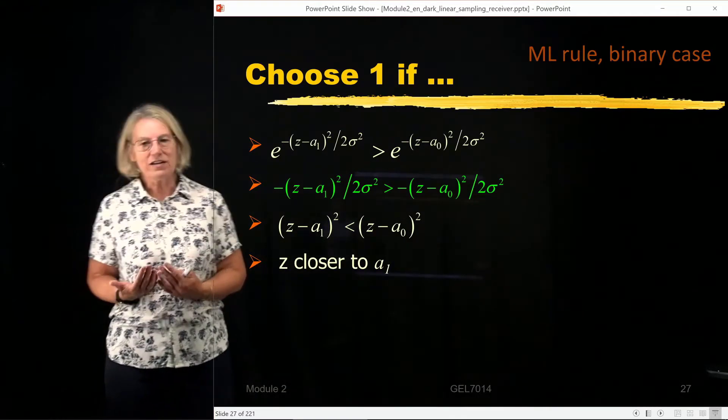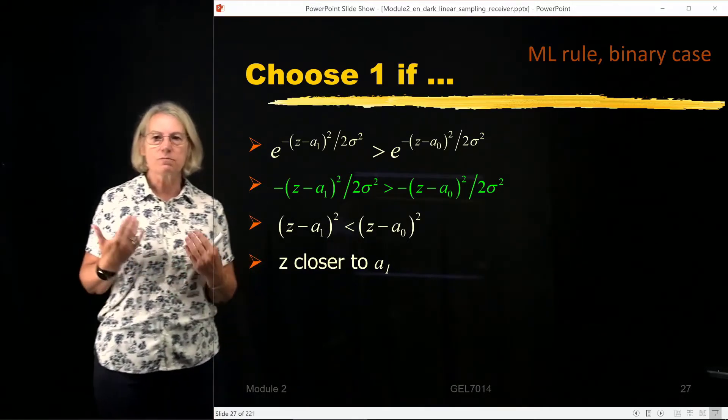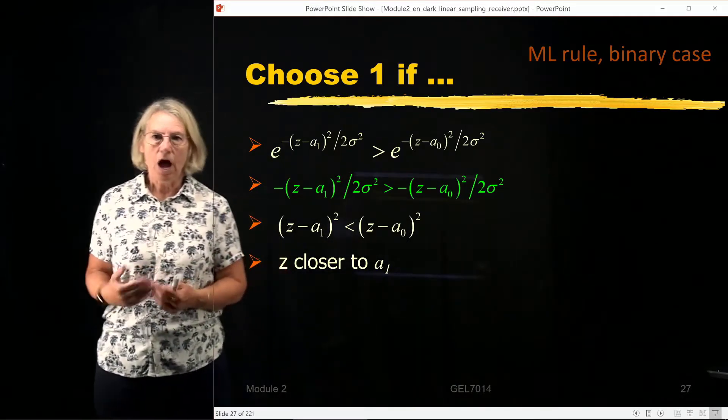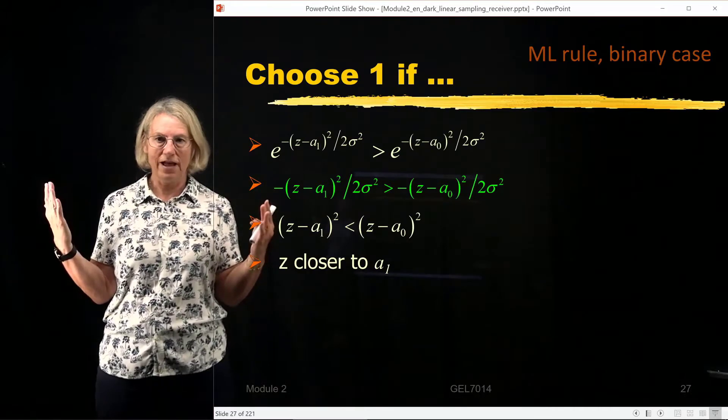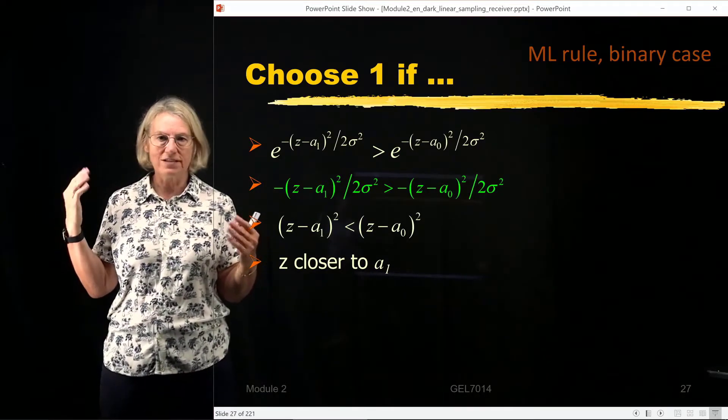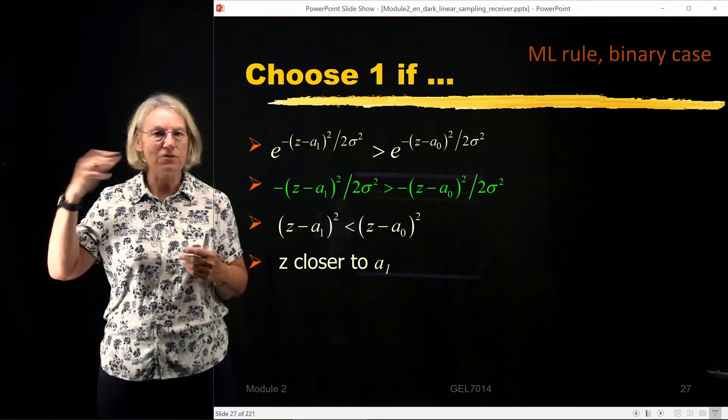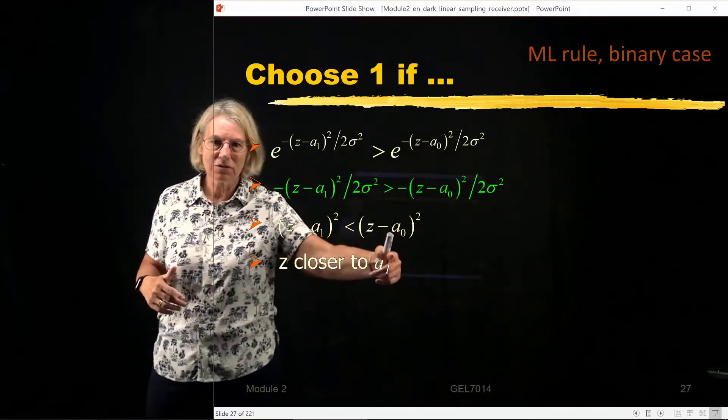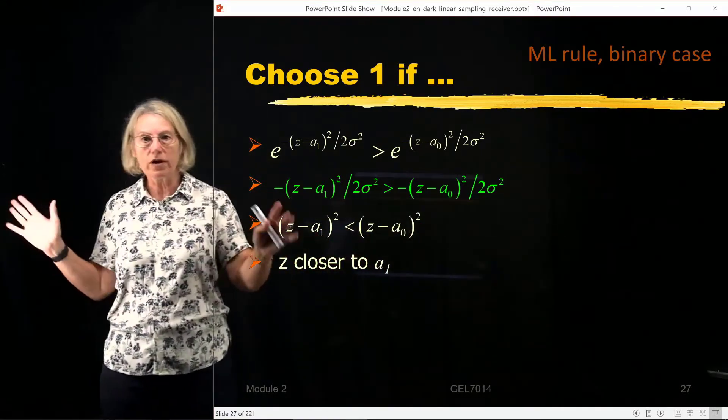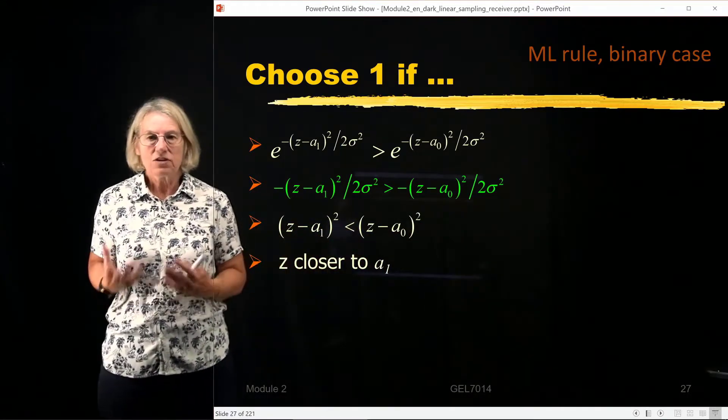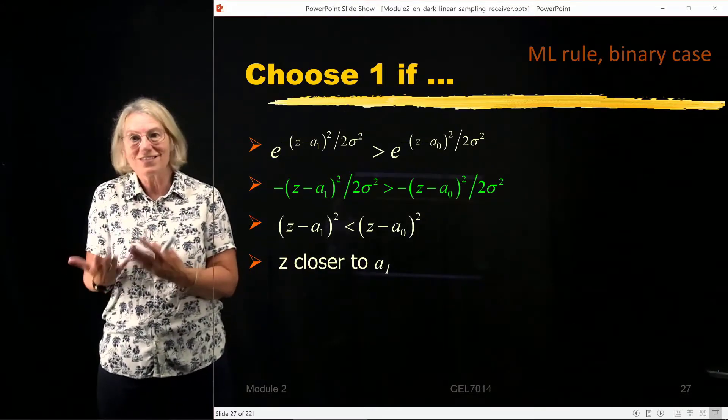So the idea here is we can think of it in terms of proximity. I have two numbers. I have if a₀ was sent the output and there was no noise I would get a₀. If a₁ was sent and there was no noise I would get a₁.